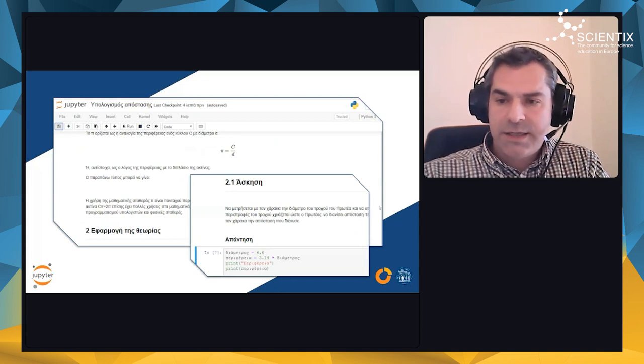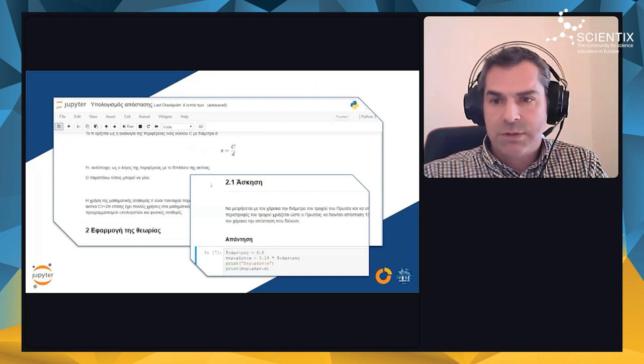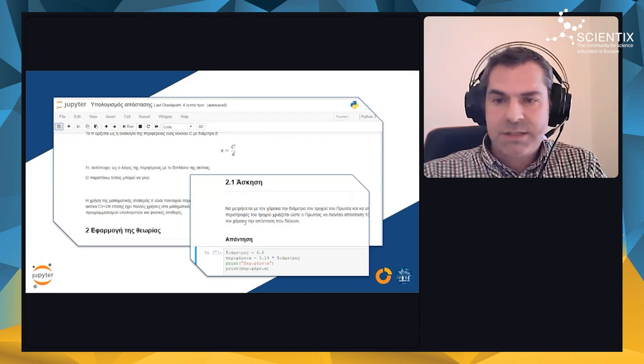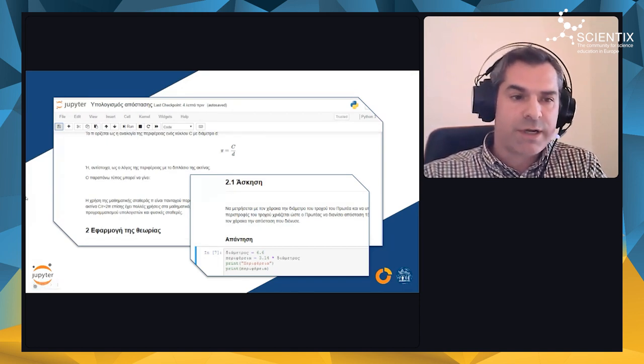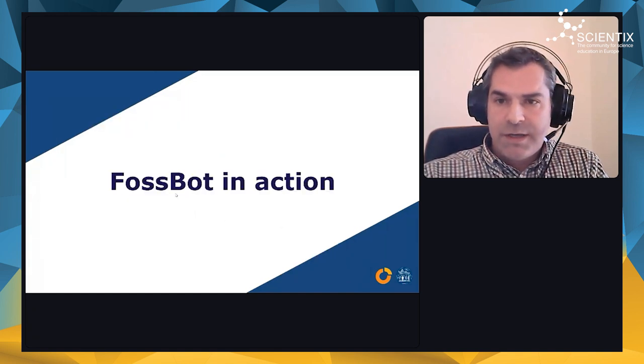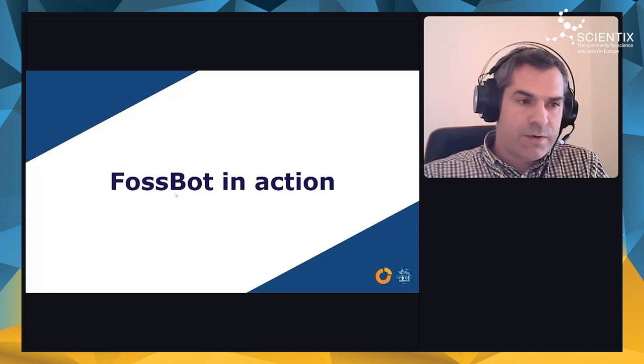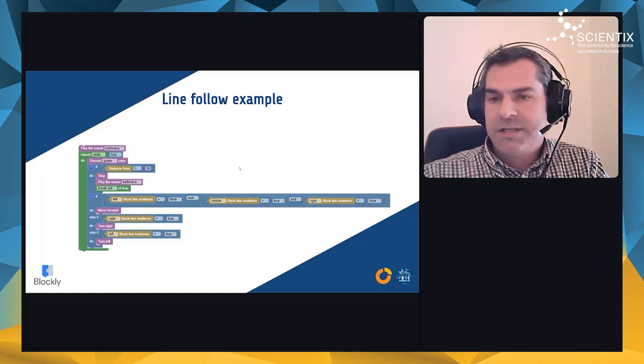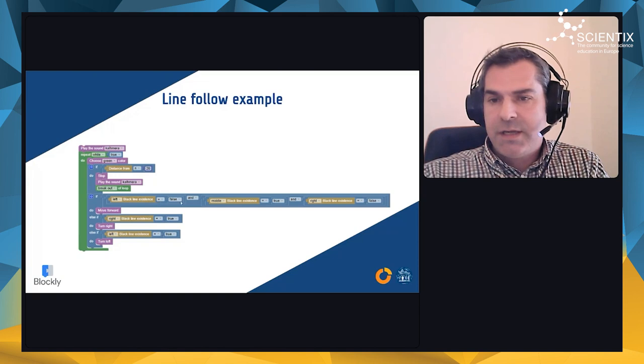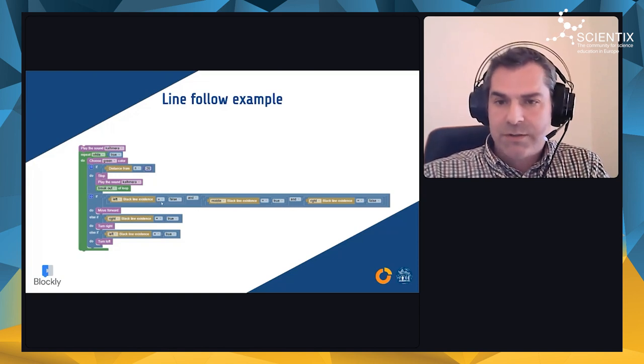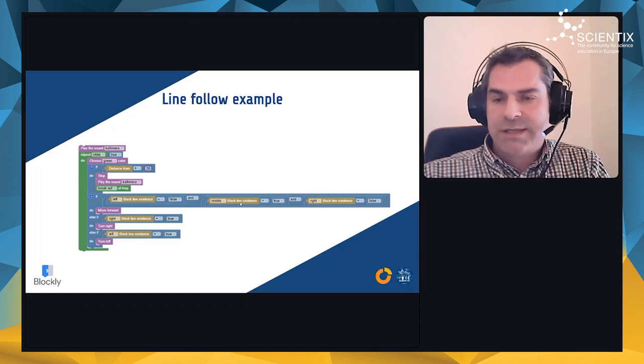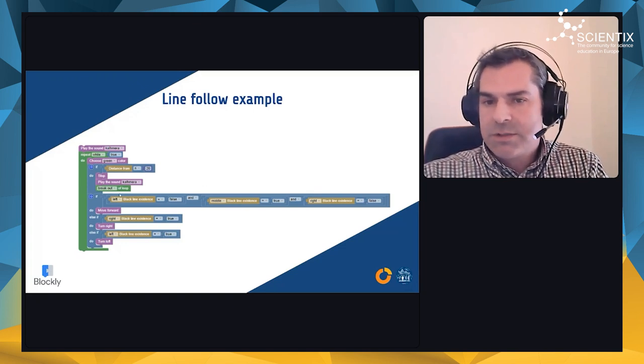This is how the most advanced mode of robot programming works—the Jupyter notebooks that we can use to train our students in programming but also other sciences, for example physics. This is an application on physics where we use the robot to demonstrate things about physics and mathematics. Let's go to some videos that demonstrate the use of FOSSBOT in action. Here is the line following example. We have a script that reads the three sensors underneath the robot and checks whether these sensors are actually checking a line or not.